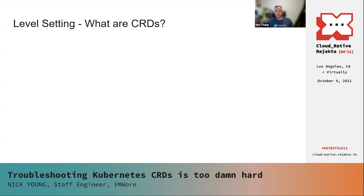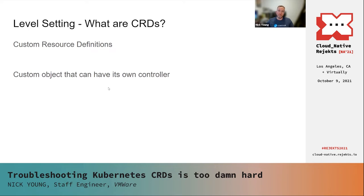Let's level-set. What are CRDs? Well, they're custom resource definitions. They're the way that you can extend Kubernetes by making your own object and your own controller to reconcile them. Because they make it so easy to extend Kubernetes, this is why everybody's doing them — lots of projects are using this sort of thing now. So I wanted to talk a little bit about what the experience of using one of those is.